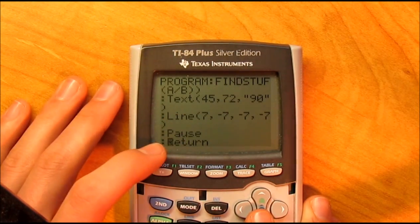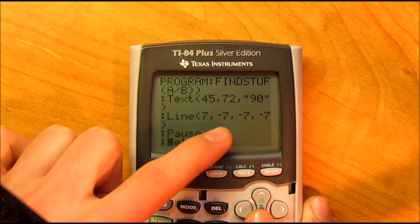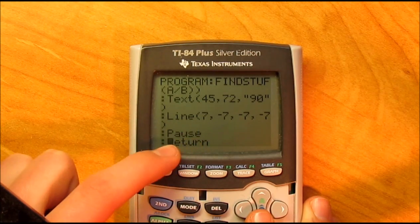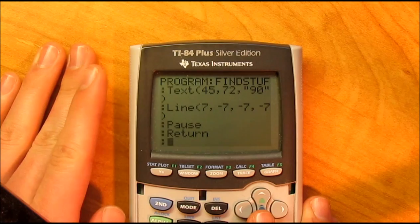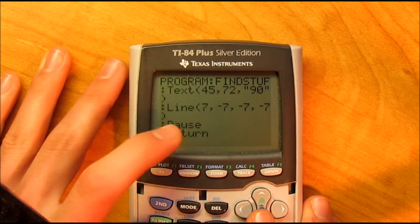So, that's the last leg, or the last side of the triangle drawn out. See, it says line. And then pause so that the screen waits for you to hit enter. And then it returns back to the main program.